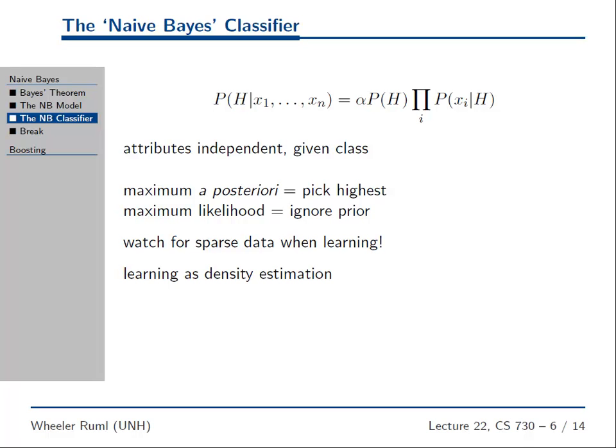So you might hear people talk about fancy things like take the maximum a posteriori hypothesis, and that just means go through and pick the biggest one. This is called the posterior, because it's after you've seen the data, what's your estimate of the probability of the hypothesis? So it's posterior, after the data, and you pick the maximum one, pick the highest, most likely hypothesis. So it's just fancy words for what you're going to be doing on the assignment.